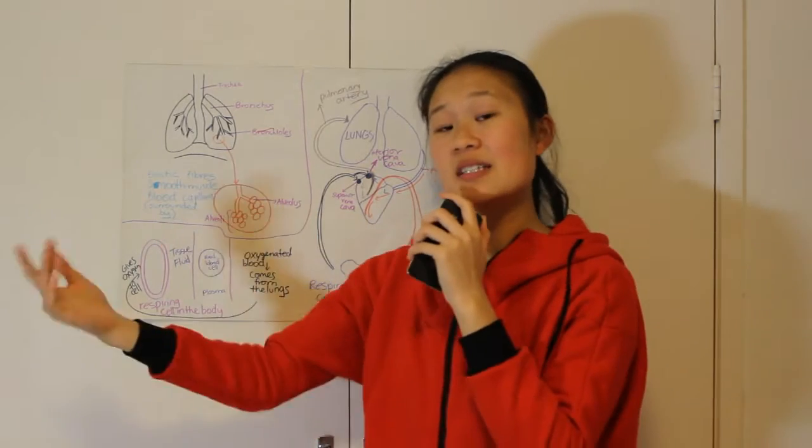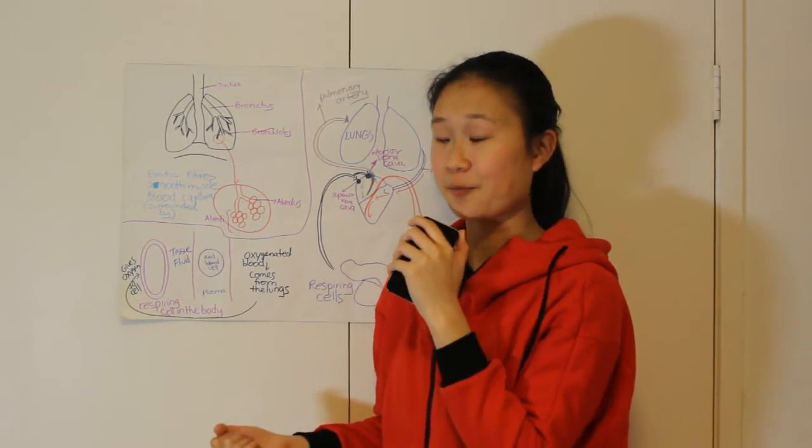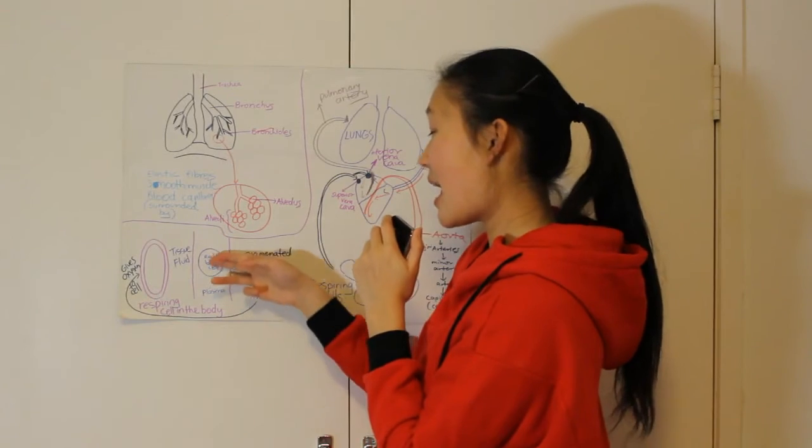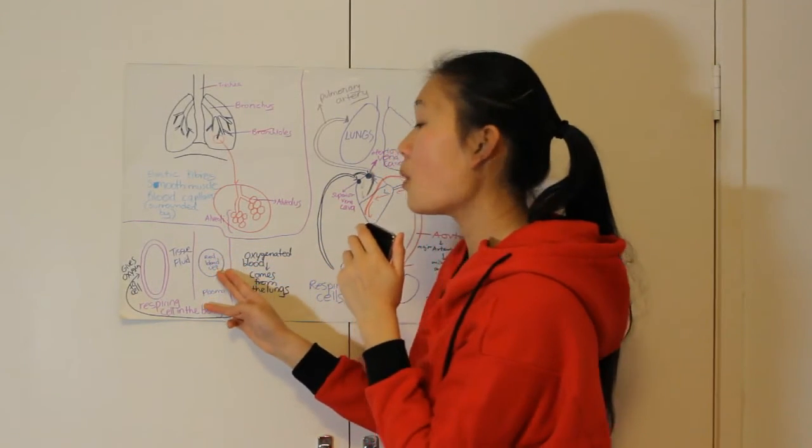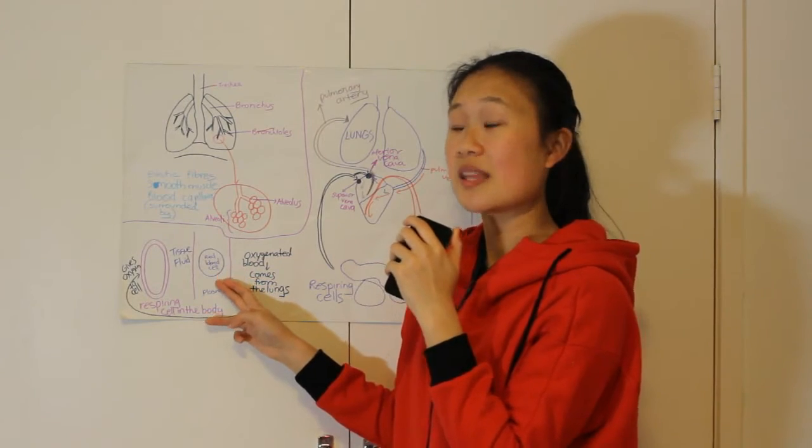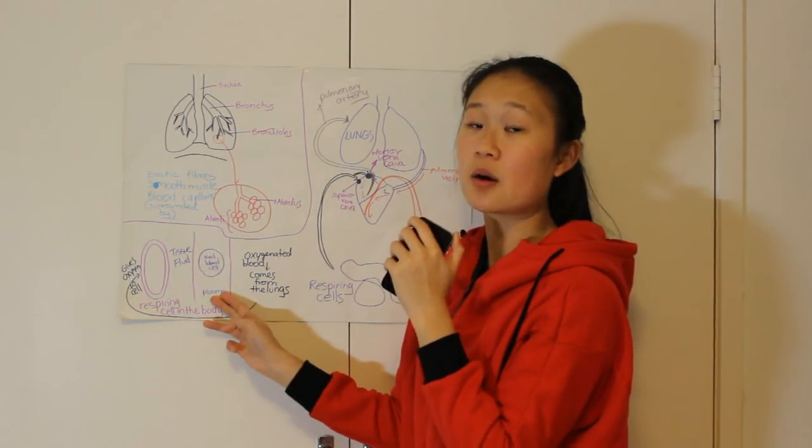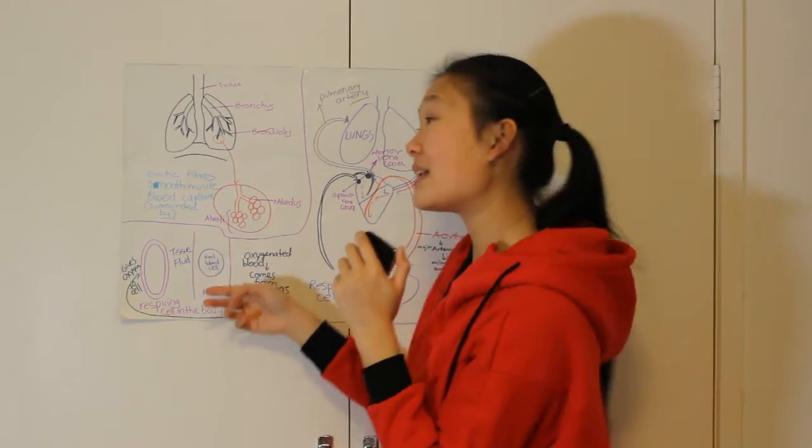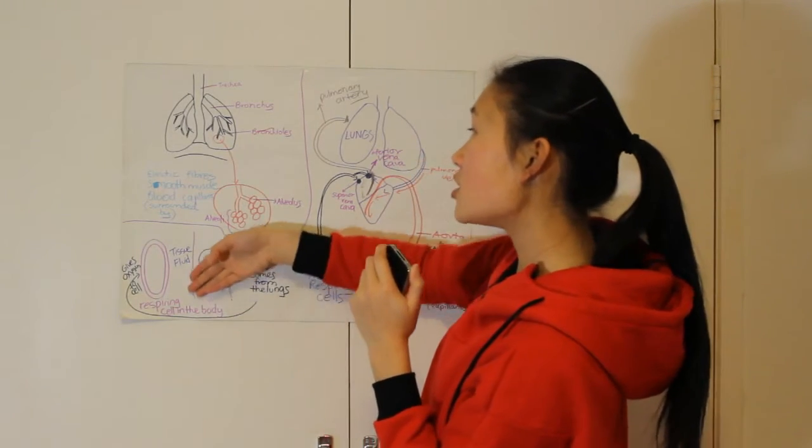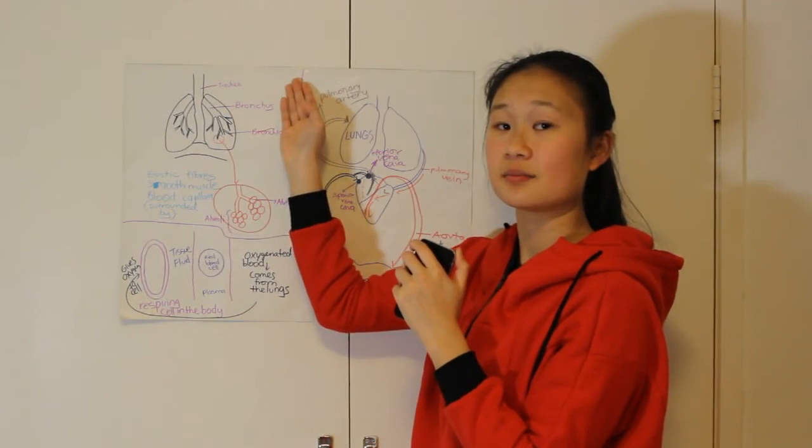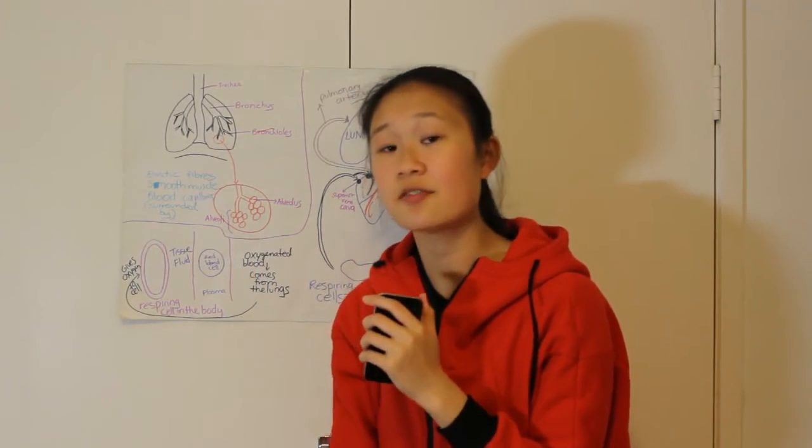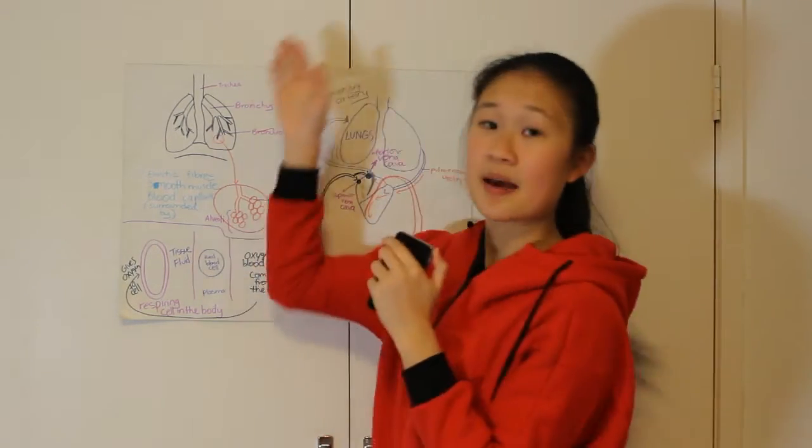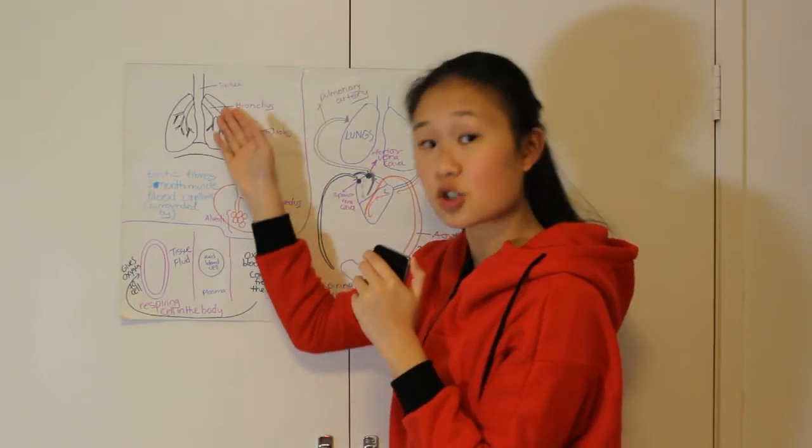Where does the bicarbonate ions go now? The bicarbonate ions will diffuse through the wall of the red blood cell and then back into the plasma where it is dissolved, and then the blood will just be taken back to the lungs. That's how 70 to 85% is taken back to the lungs so it can be oxygenated.